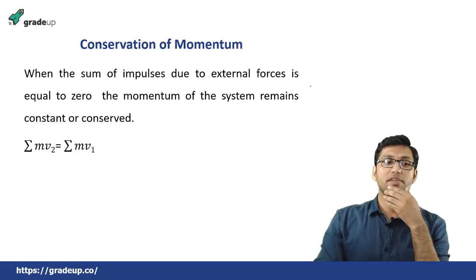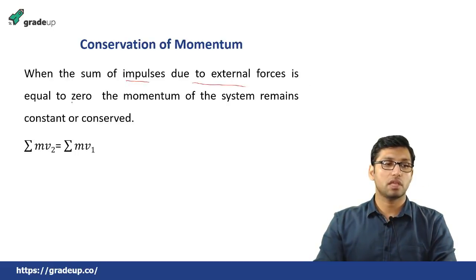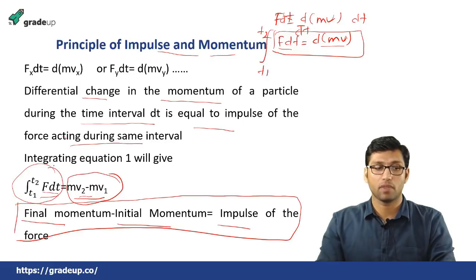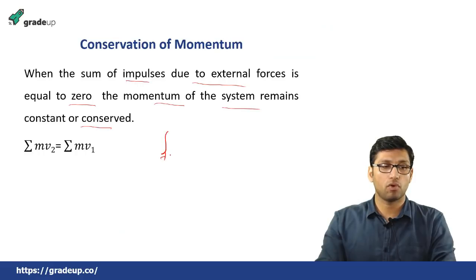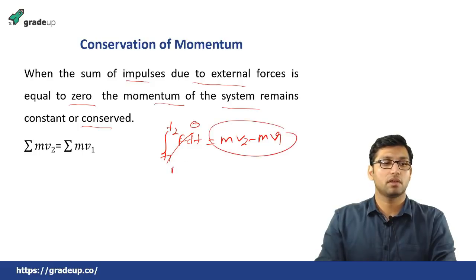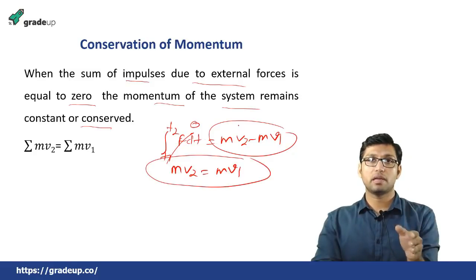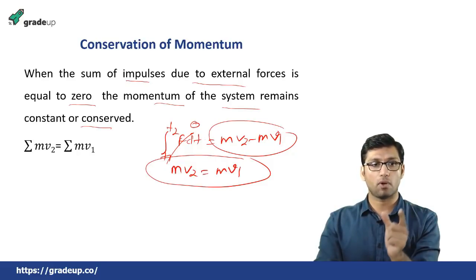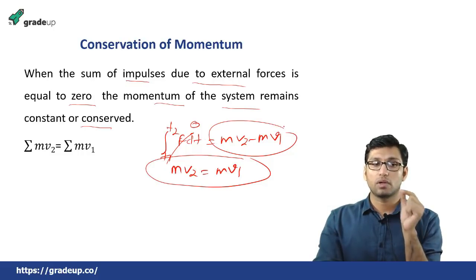Now, what is conservation of momentum? Conservation of momentum says that when the sum of the impulse due to external forces is equal to zero, then the momentum of the system remains constant or conserved. From the principle of linear impulse and momentum, F dt = MV2 − MV1. If the sum of all impulse forces acting on a body is equal to zero, then MV2 = MV1 — that means total initial momentum equals final momentum, so momentum is conserved.